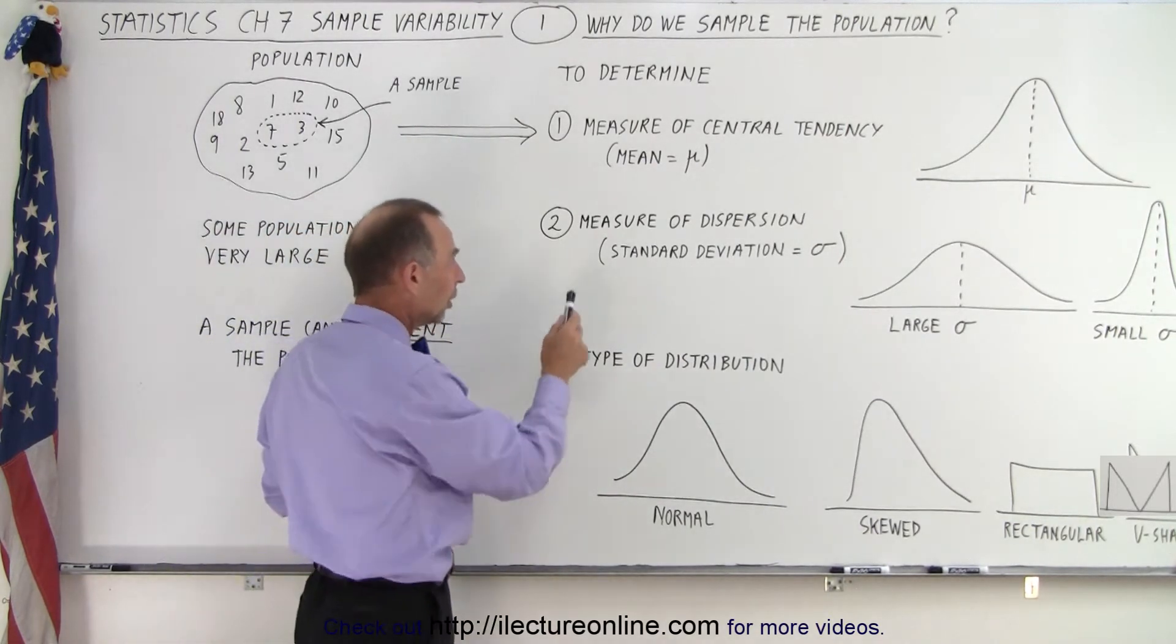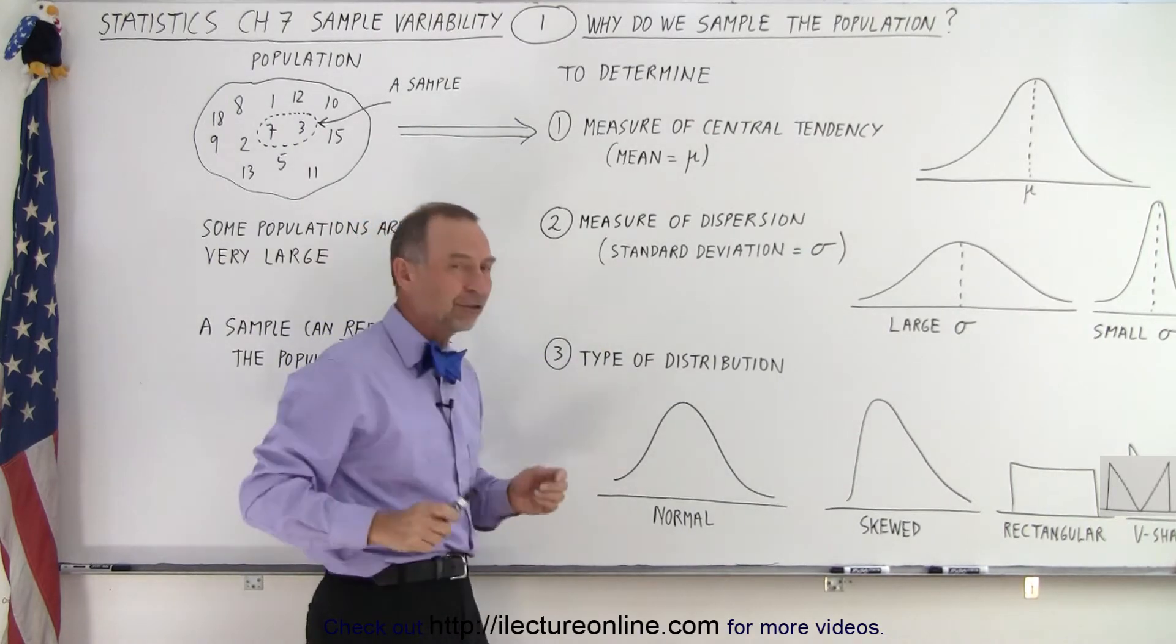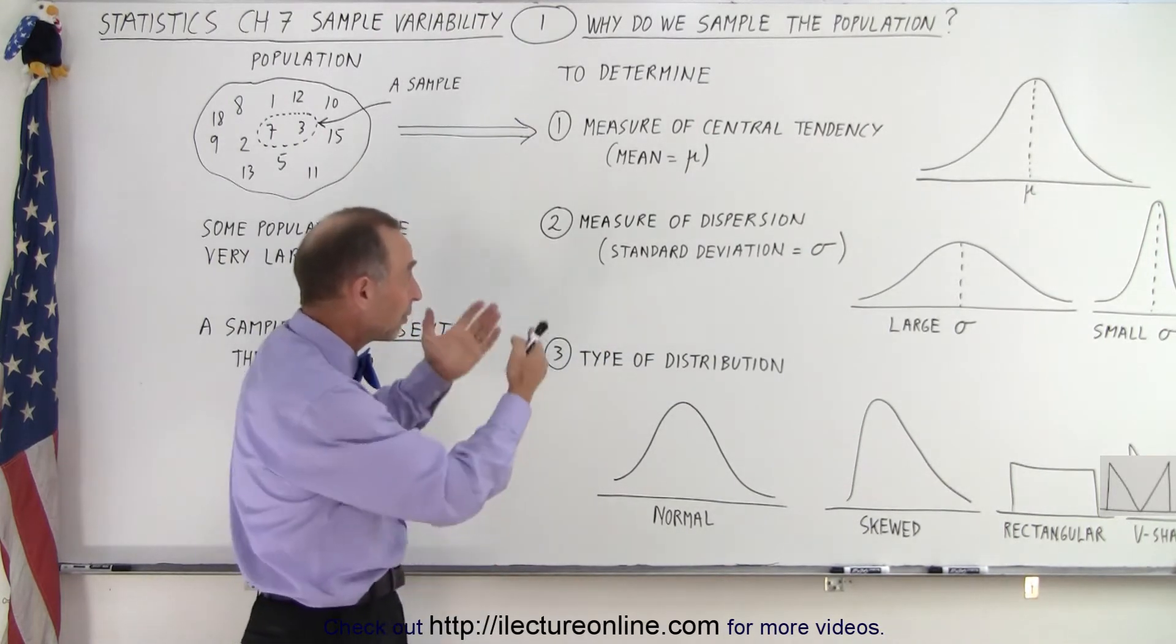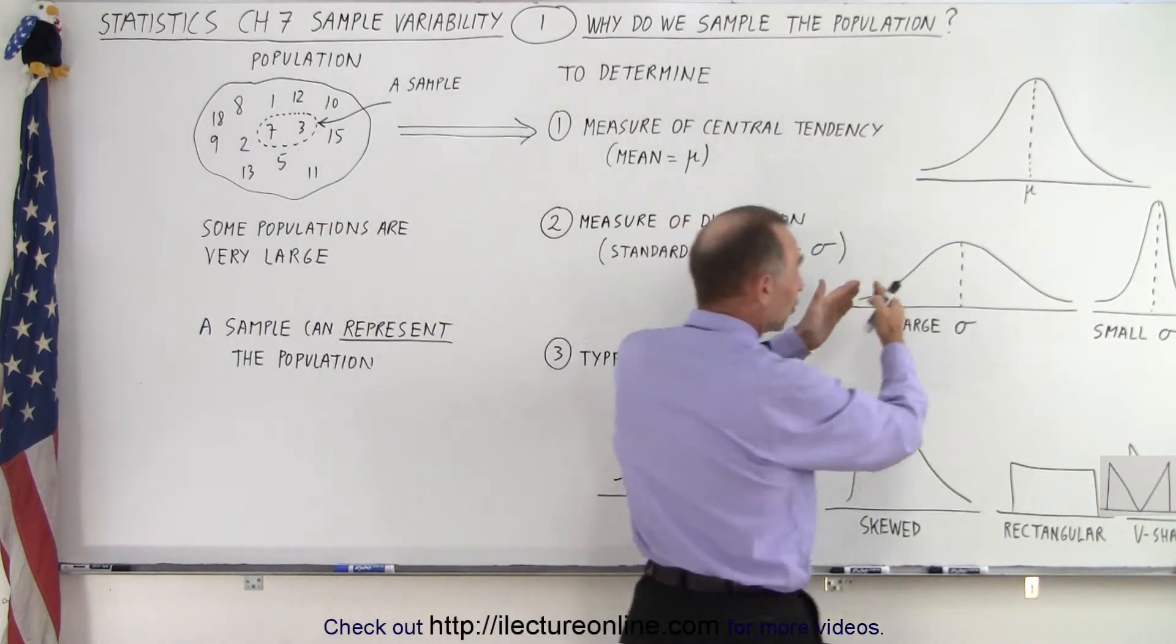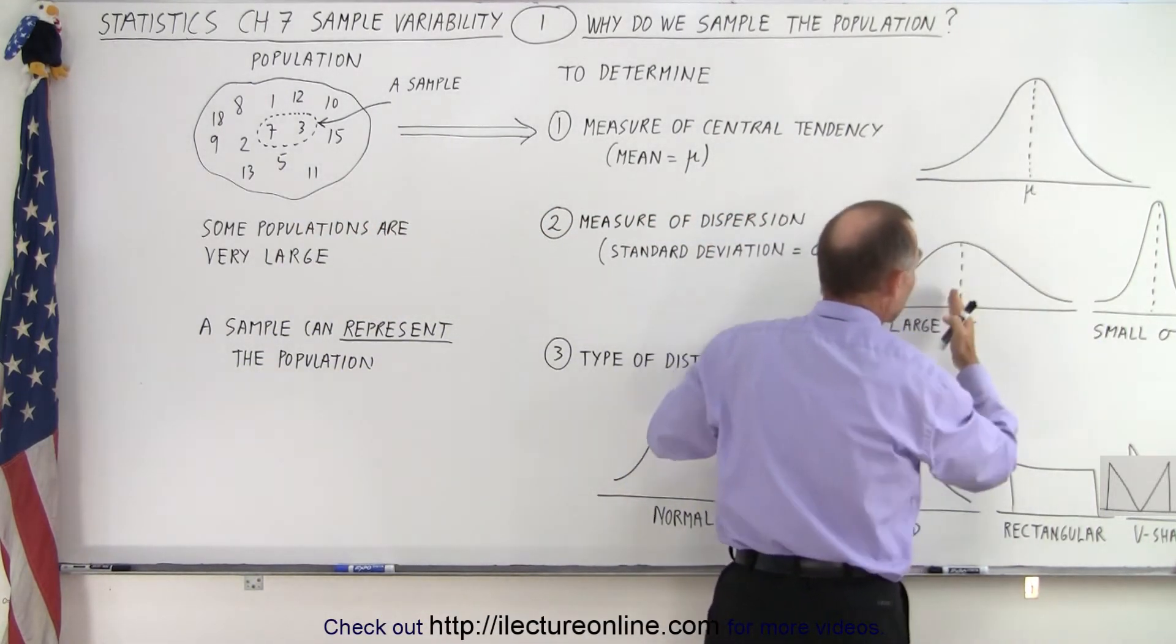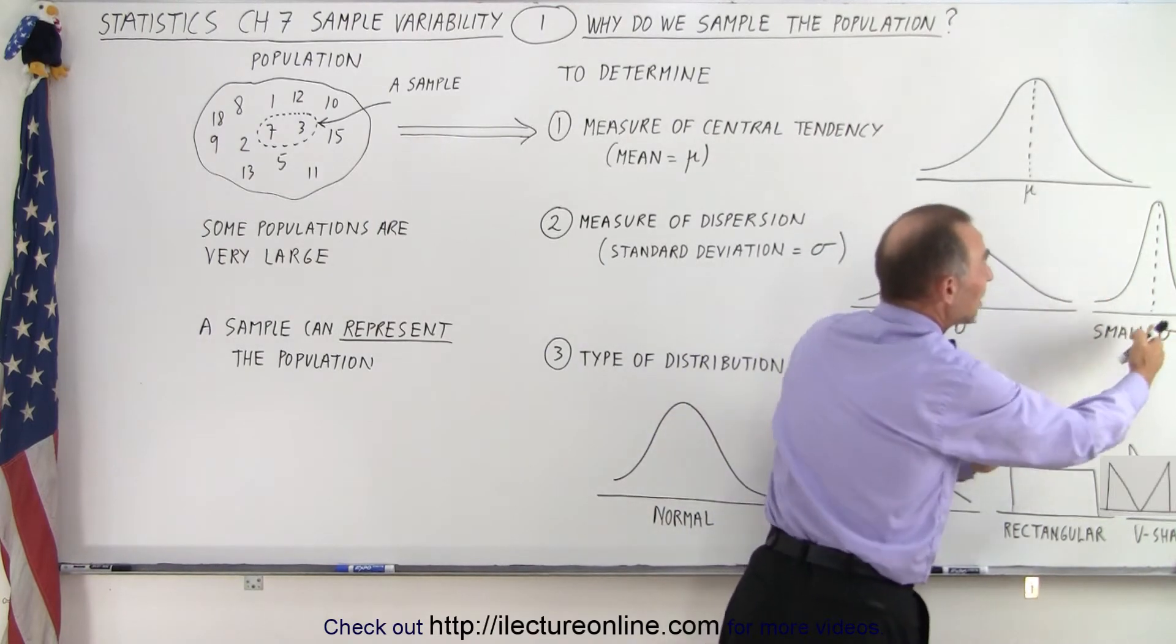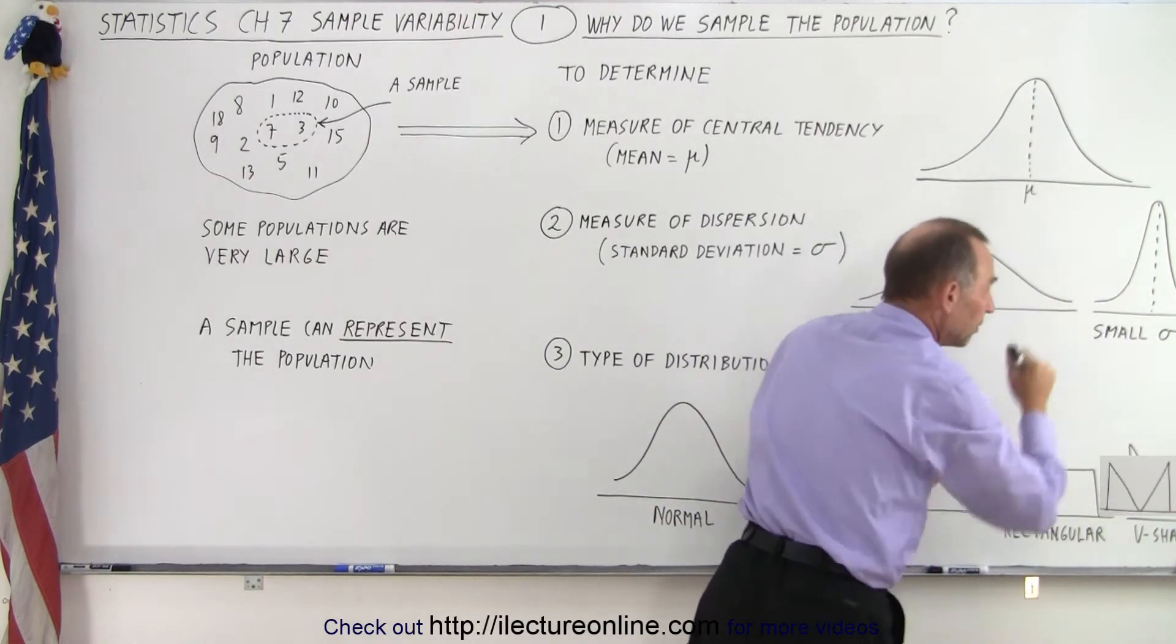We also want to use or calculate the measure of dispersion. That's a fancy way of saying we want to find the standard deviation. We can of course have large standard deviations where the data spread far away from the mean, or we can have small standard deviations where all the numbers are close to the mean.